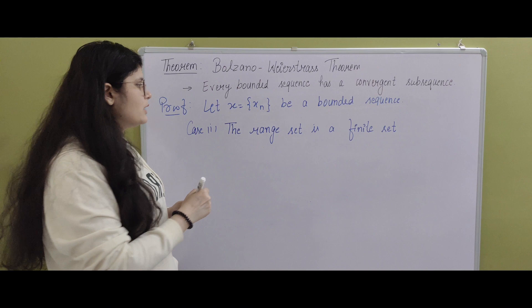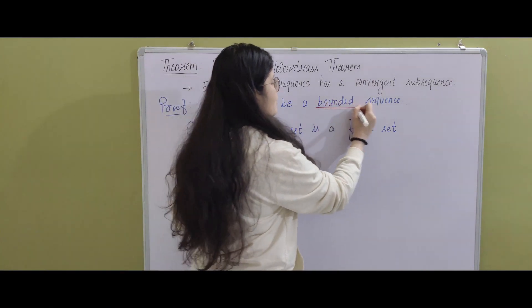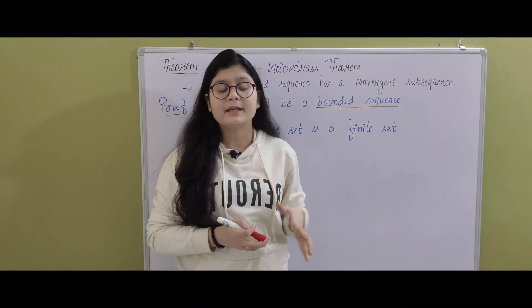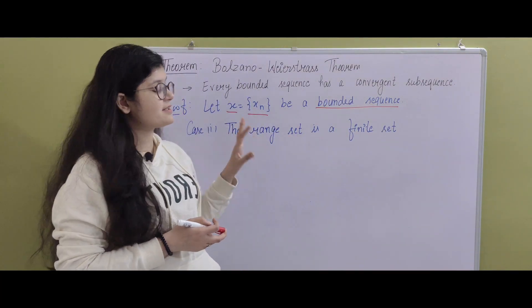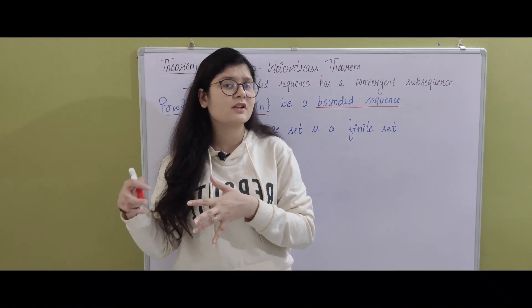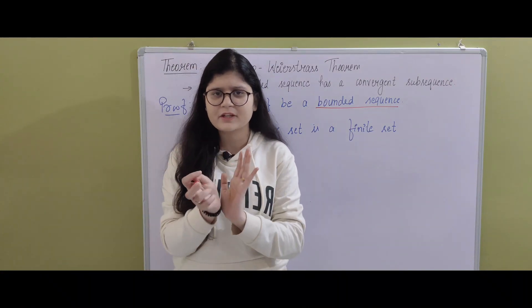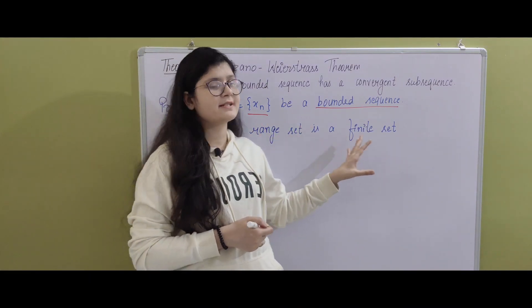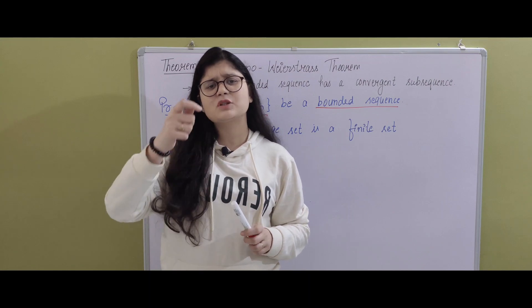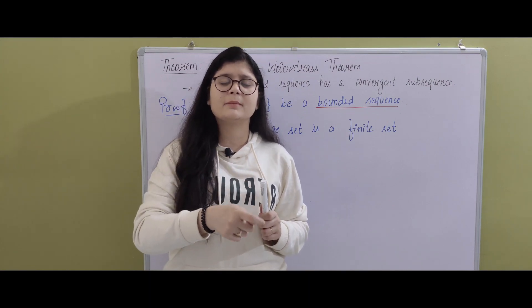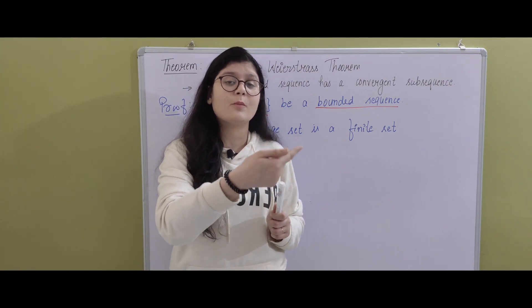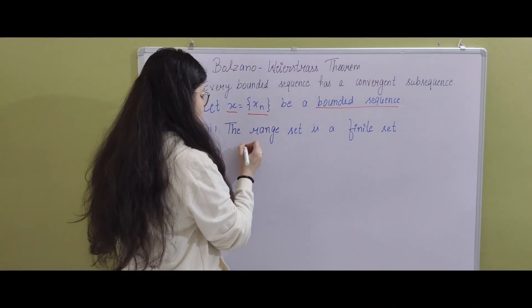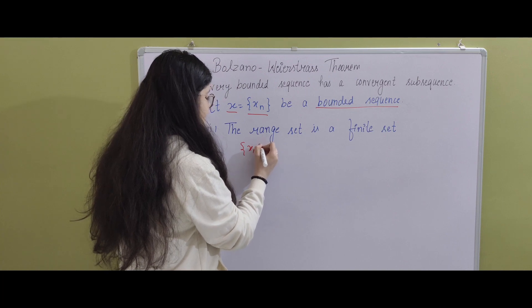Let x = {x_n} be a bounded sequence. Now there are two cases: the first is when the range set is finite, and the second when the range set is infinite. When the range set is finite, it means there is at least one element which is repeating in the sequence infinitely many times.